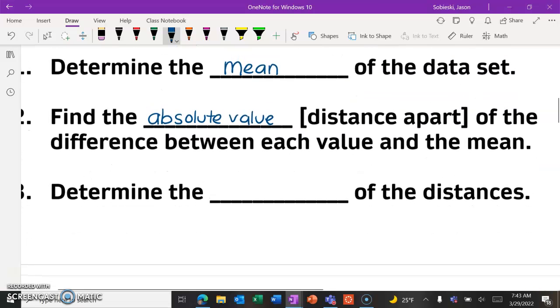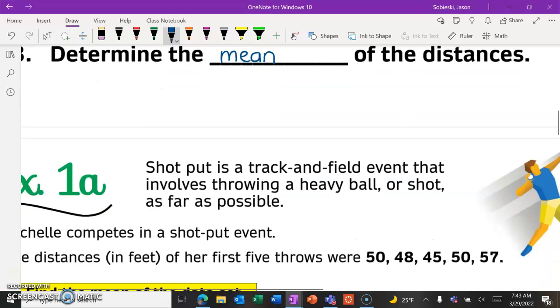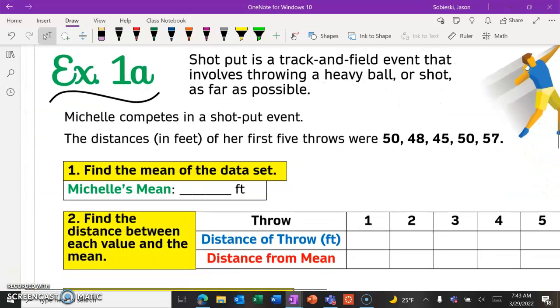And then lastly, once we have those distances, we are going to determine the mean of them. So we're starting with the mean of the data set, figuring out how far apart the mean is from all of the data points, each one individually, and then we're going to take the mean of those distances. So let's jump in with this example.